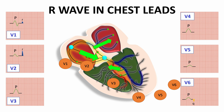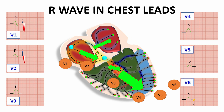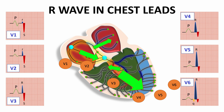After septal depolarization, the major depolarization of the left ventricle proceeds toward the apex of the heart — away from V1 and V2, drawing a large negative S wave in those leads — and toward V4, V5, and V6, drawing a large positive R wave in those leads. In V3, the depolarization goes parallel to the lead, so it first draws a positive wave, then as depolarization moves away it records a negative wave. Then we have the S wave representing the remaining depolarization of the left and right ventricle.